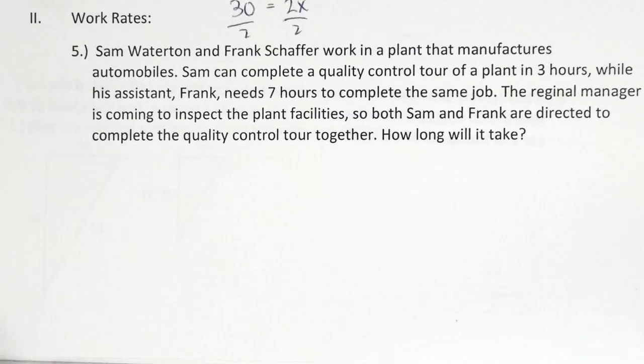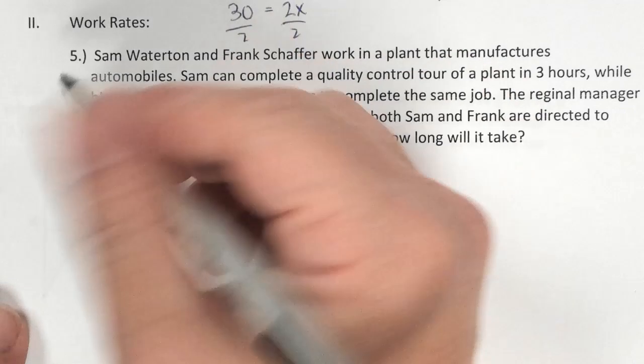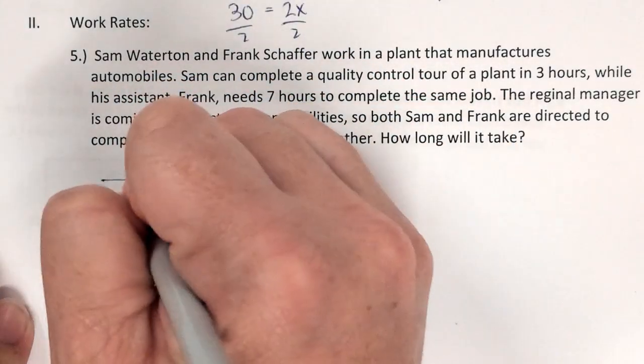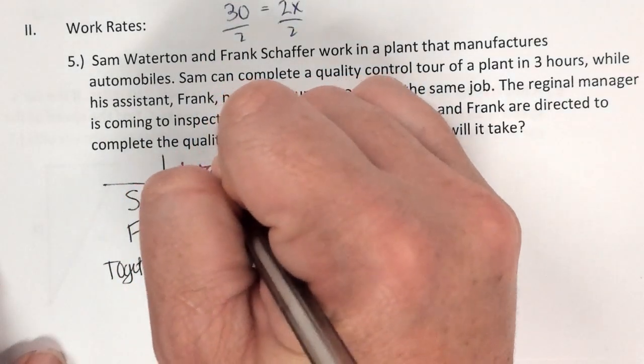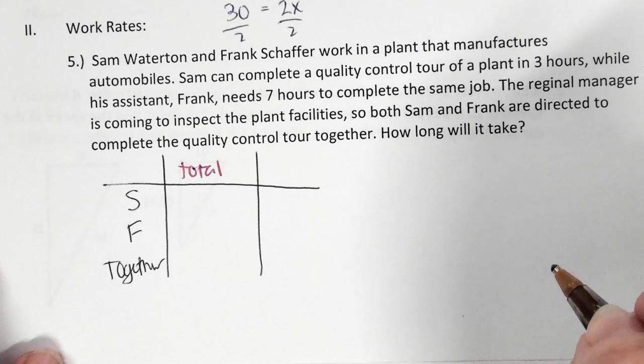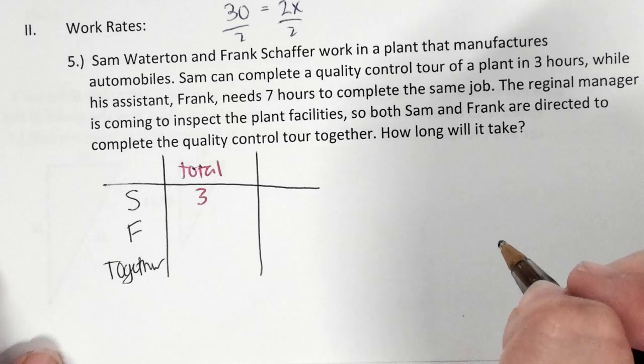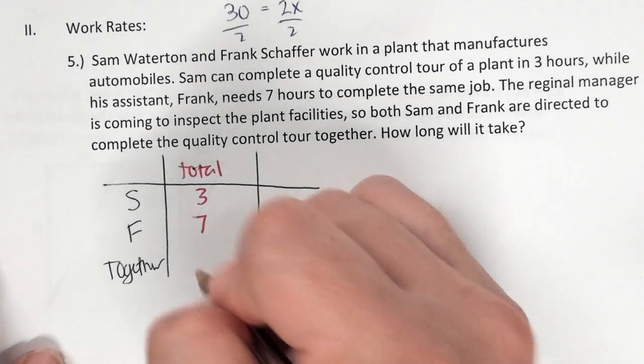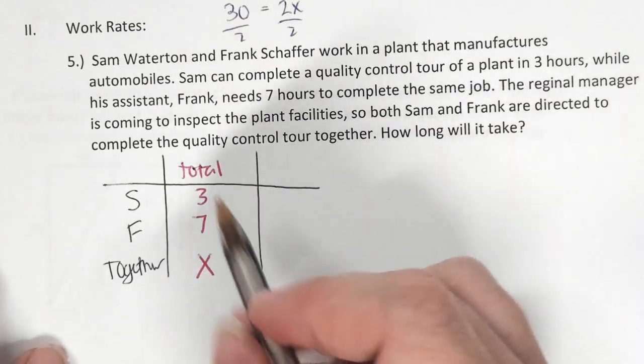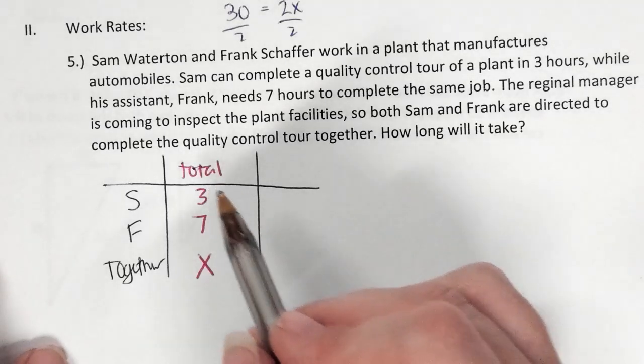Okay, so that's my last proportion problem that we're going to do together. Now we're going to look at work rates. So if Sam and Frank work in a plant that manufactures automobiles, Sam can complete a quality control tour of a plant in 3 hours while his assistant Frank needs 7 hours to complete the same job. The regional manager is coming to inspect the plant facility so both Sam and Frank are directed to complete the quality control together. How long will it take? Okay, so now we're going to bring it down. And we're going to use a table. We have Sam, we have Frank and then we have them together.